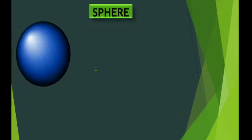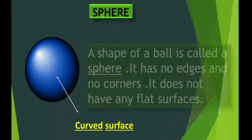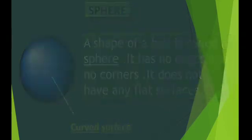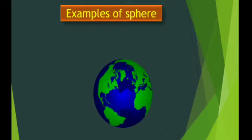Next is sphere. Now a sphere has only curved surface. A shape of a ball is called a sphere. It has no edges and no corners. It does not have any flat surfaces.